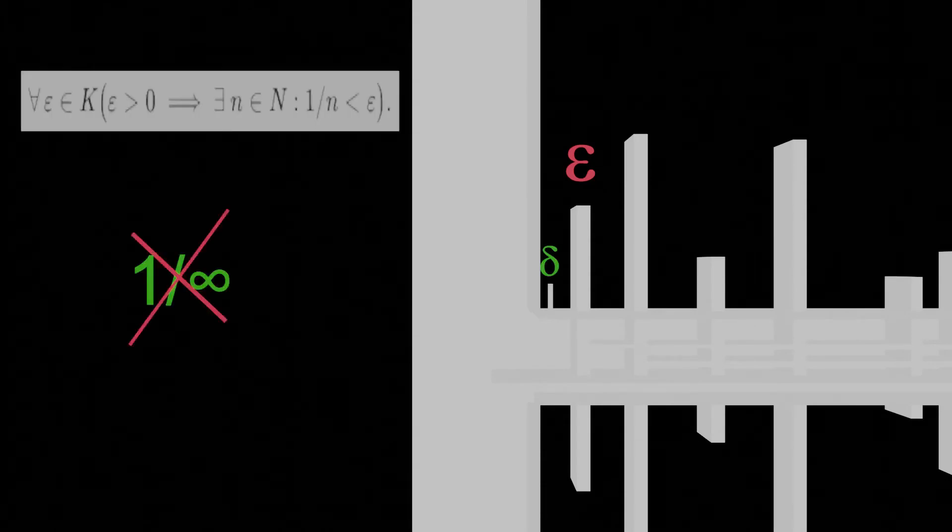This is equivalent to say that for any real number, however small, we can always find a natural number whose reciprocal is even smaller.